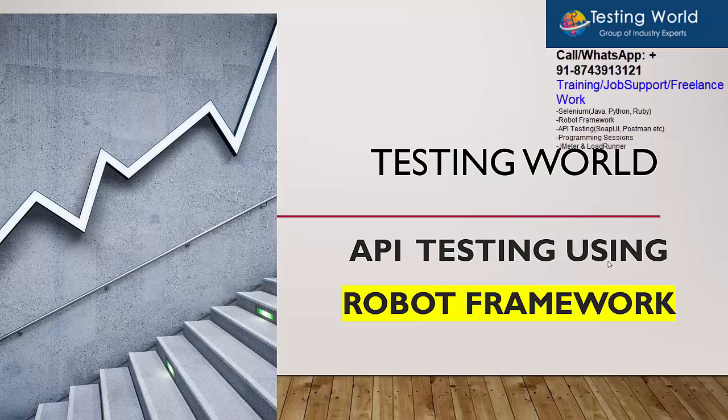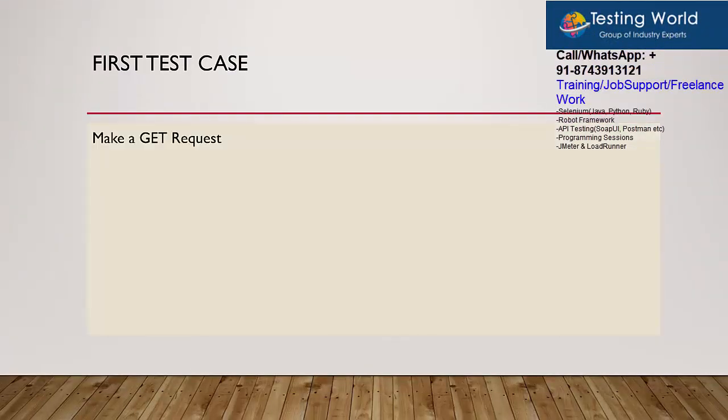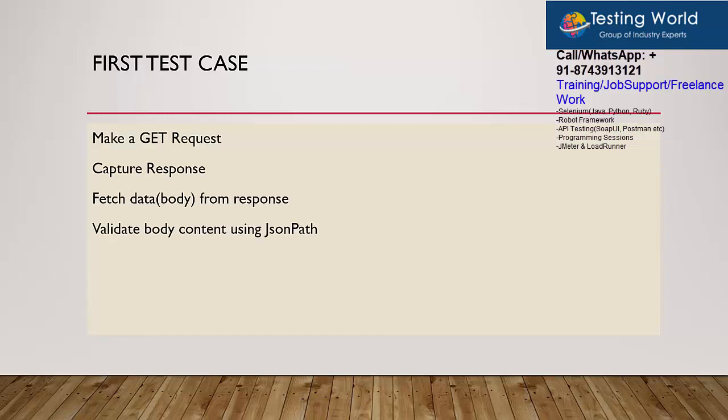Welcome to the testing world. In the previous session I showed you how we can do API testing using Robot Framework. We made a GET request, captured the response, and validated the status code. Now in this session I will show you how we can capture response content and validate content using JSON path.